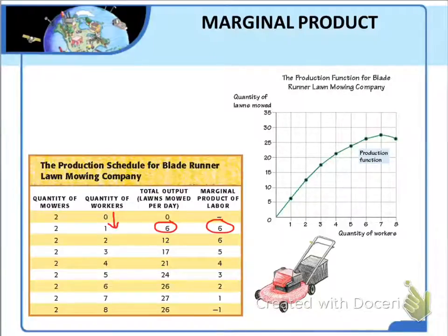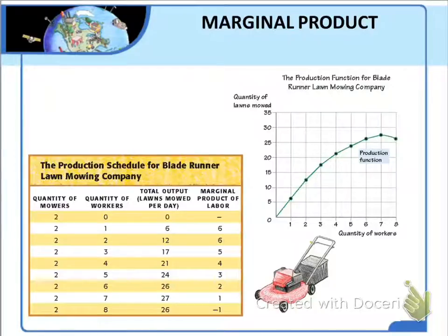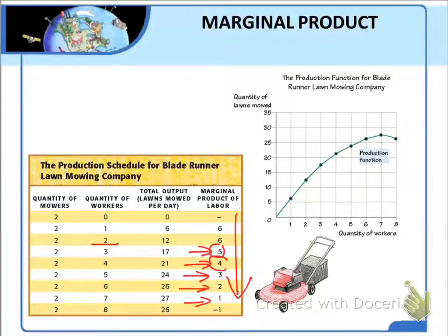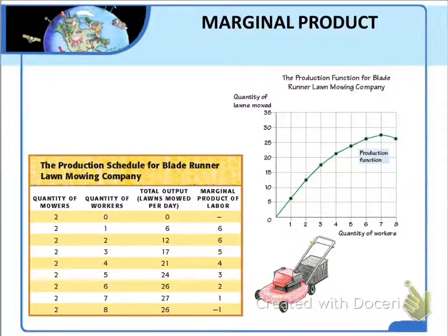After the second worker, each additional worker has a smaller marginal product than the one before. The third worker has a marginal product of five lawns, the fourth worker four lawns, the fifth worker three lawns, and so on — marginal product is going down. The marginal product is five for the third worker, four for the fourth worker, three for the fifth worker, and so on. Let's explore why marginal product behaves this way.